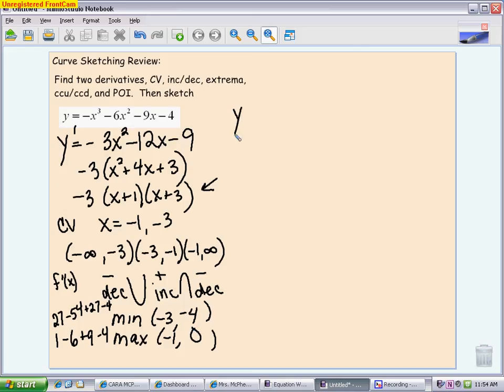Now I'm going to do my second derivative. My second derivative is -6x - 12. It should get easier as you go. Take out a -6, leaving you with x + 2, giving me a possible point of inflection of x = -2.